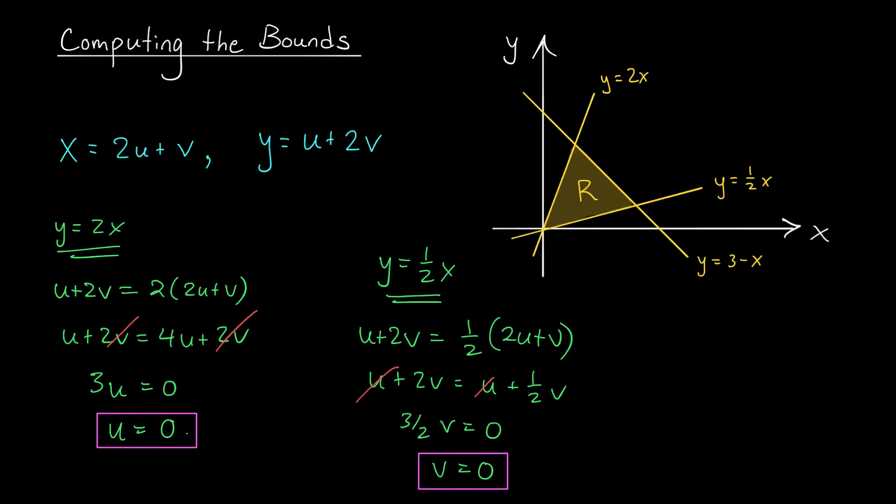Lastly we have to check the line y = 3 - x. By using my descriptions of x and y I get u + 2v = 3 - 2u - v. Now I can rewrite that as 3 - 2u - v and maybe I'll move my v to the left and my u to the right. That gives me 3v = 3 - 3u. I'll divide by 3 to get v = 1 - u. Okay so my third line gets mapped to the line v = 1 - u in the uv plane.